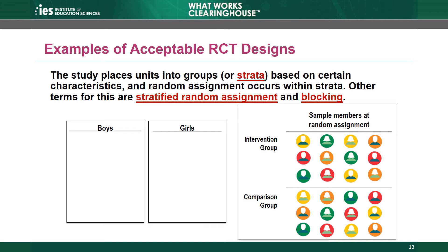Researchers use this strategy when they want to make sure the intervention and comparison groups have similar ratios of boys and girls. Study authors can block on just about any characteristic and may also choose to block on multiple characteristics. For example, if the researchers want to make sure to have high, middle, and low achieving students in both conditions, they could block by achievement and randomly assign students within those blocks.